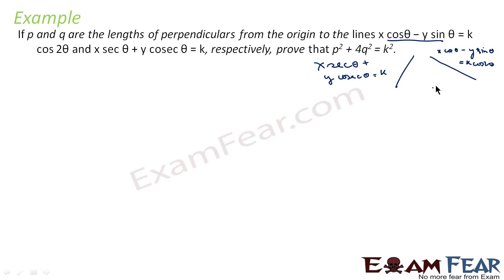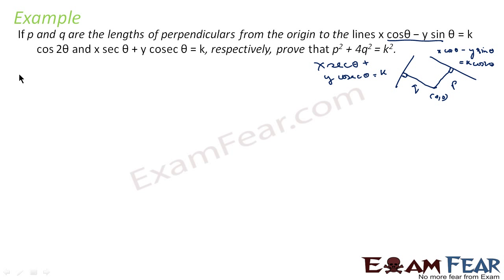From the origin, if we draw a perpendicular to the first line, that length is p, and the perpendicular length to the second line is q. We have to prove that p² + 4q² = k². Let's first find the value of p.